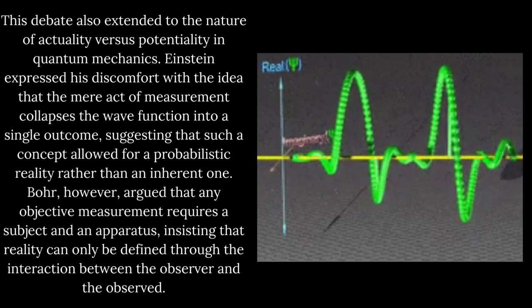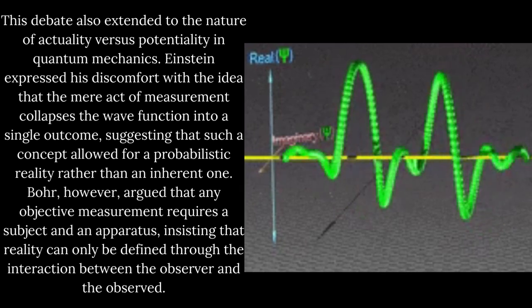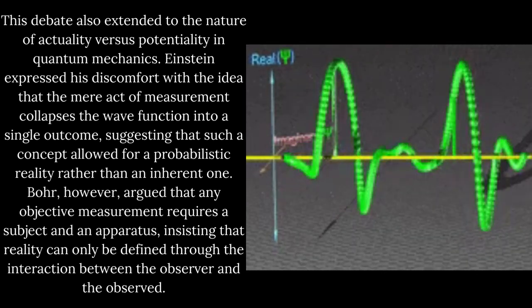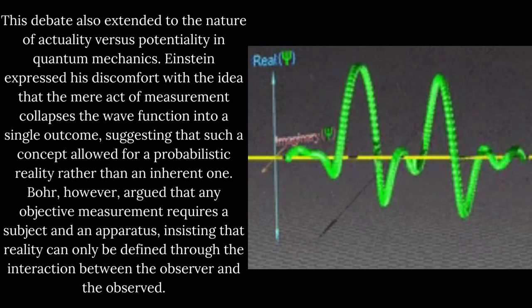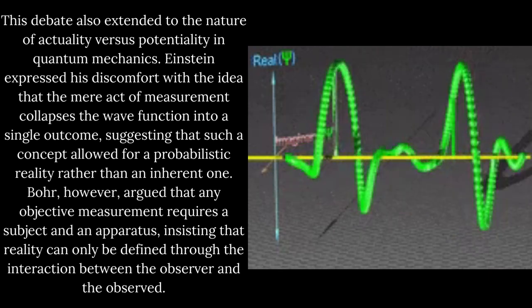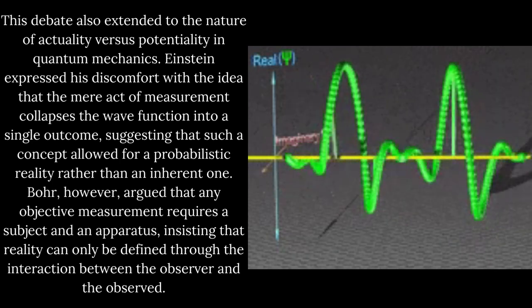This debate also extended to the nature of actuality versus potentiality in quantum mechanics. Einstein expressed his discomfort with the idea that the mere act of measurement collapses the wave function into a single outcome, suggesting that such a concept allowed for a probabilistic reality rather than an inherent one.